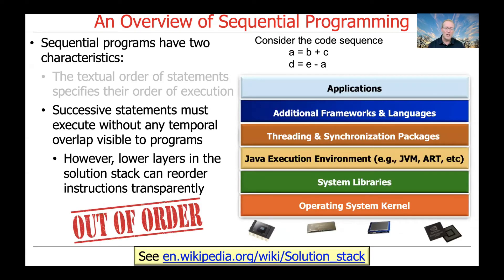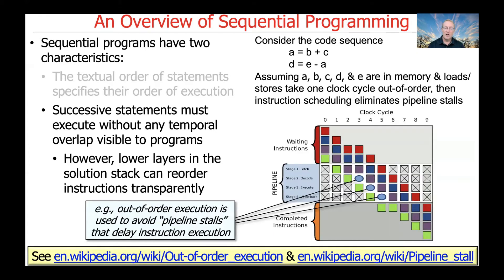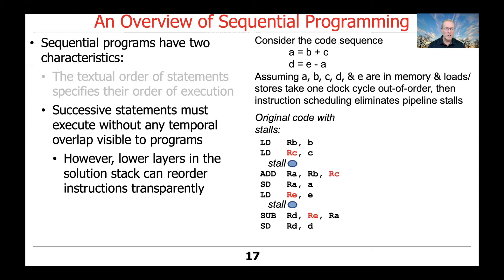However, under the hood, lower layers in the solution stack — which includes hardware and software — can reorder instructions transparently as long as it's not visible to the programs or programmers. For example, out-of-order execution can be used to avoid pipeline stalls that delay instruction execution, sometimes known as bubbles in a pipeline. Here's the original code that could be generated at the assembly level that includes stalls. Loading the value of memory location C into register C will have a stall because it takes one clock cycle to get a load or store. Therefore, there'll have to be a stall included as a bubble in the pipeline.